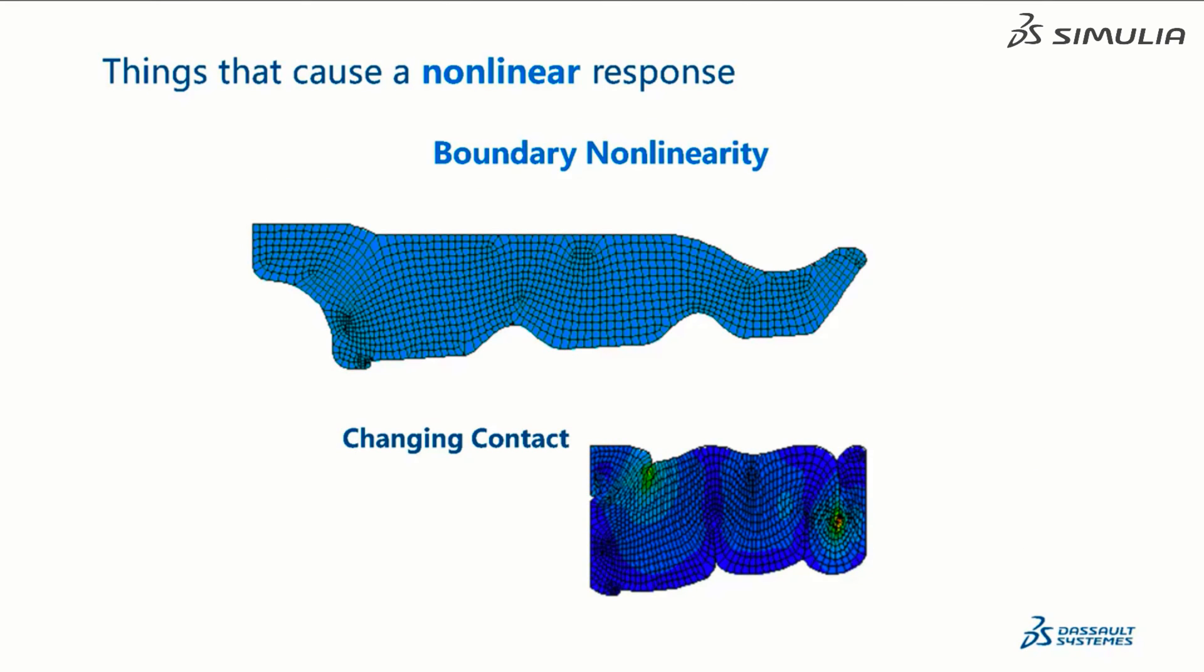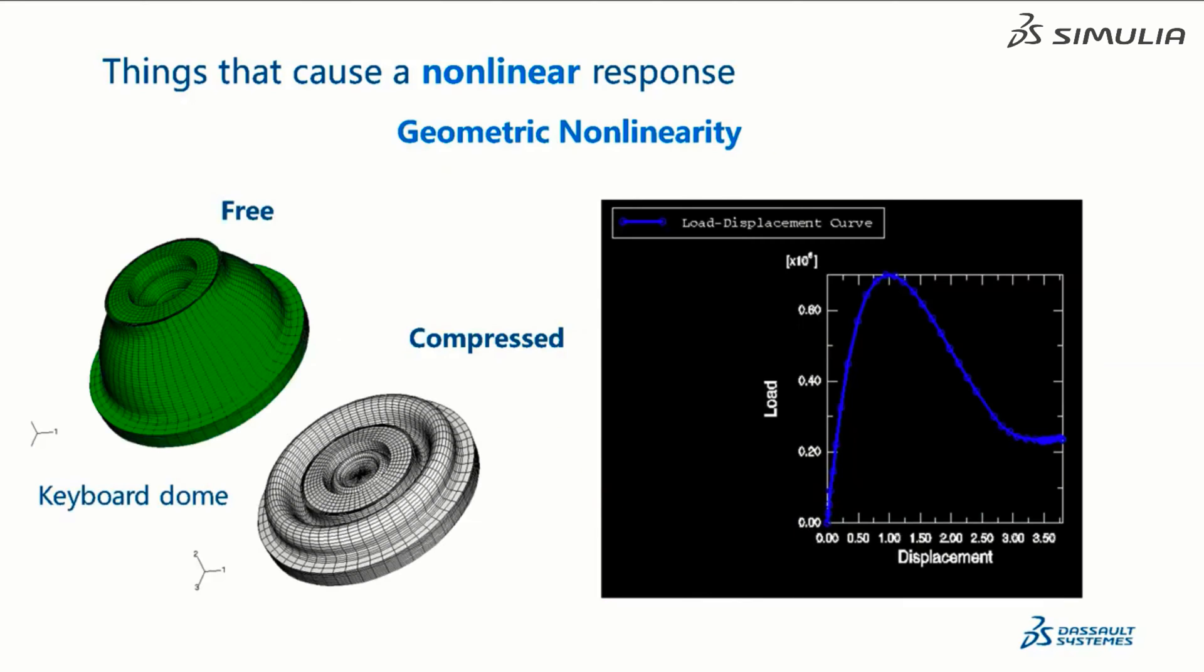Changing contacts between parts causes something called boundary nonlinearities. Parts that experience very large displacements cause geometric nonlinearities.